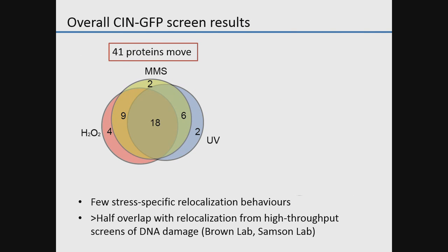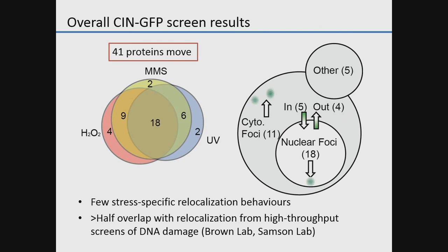The results of the screen showed that 41 proteins moved reproducibly in response to these different stresses, with very few stress-specific relocalization events — most proteins moved in response to all three stresses. The most common movement was into nuclear foci, primarily DNA repair foci but also other structures I'll discuss today, as well as proteins moving into and out of the nucleus and into cytoplasmic foci including P bodies, stress granules, and protein aggregates.